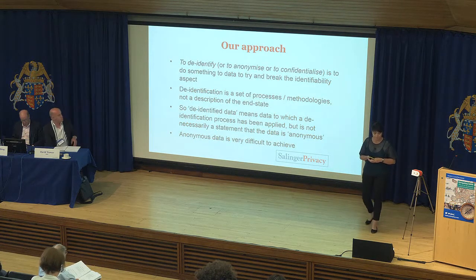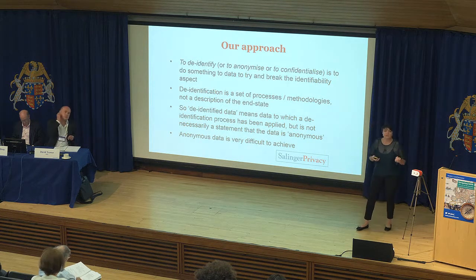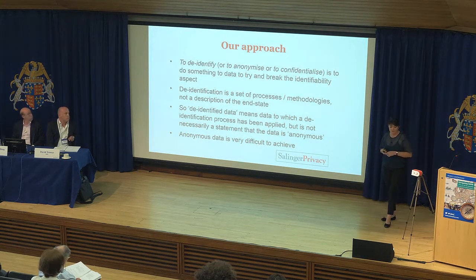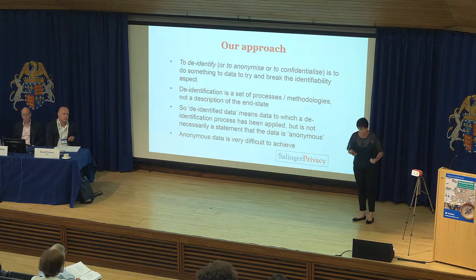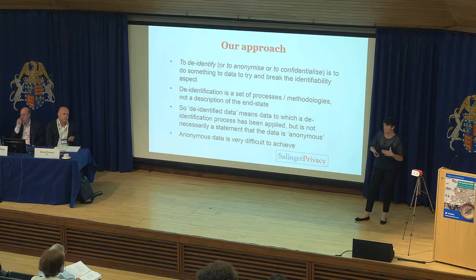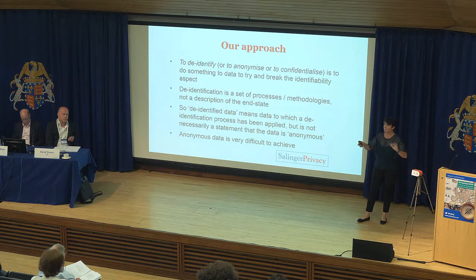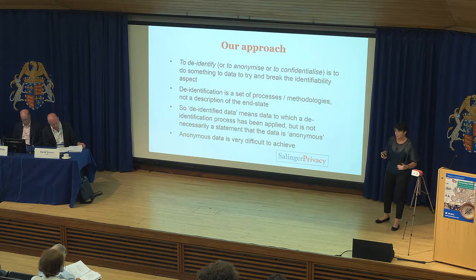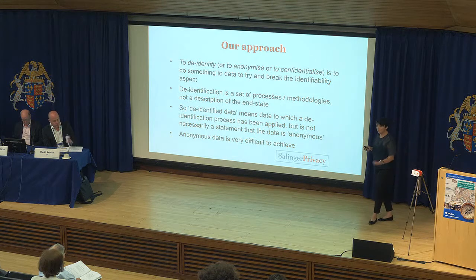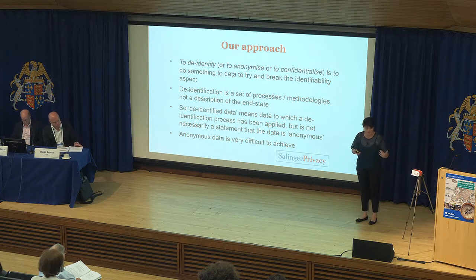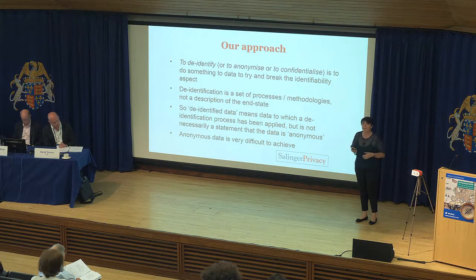Here's how we use them. I draw a distinction between the verb and the noun. To de-identify — the verb — to confidentialise, to anonymise, means to do something to the data, to try and break the link between the data and the person, to try and break that identifiability aspect. When we talk about de-identification or anonymisation or confidentialisation, we're talking about a set of processes or methodologies that you would use to try and achieve that. It's not a description of the end state.